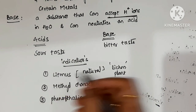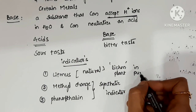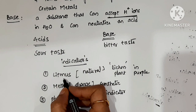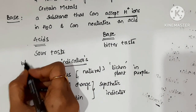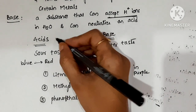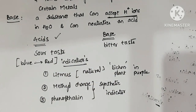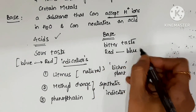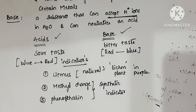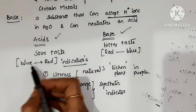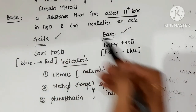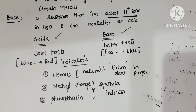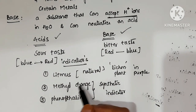Litmus is actually a purple dye — it is purple in color. When litmus paper turns blue to red, the substance is an acid. When litmus paper turns red to blue, the substance is a base. The litmus paper is dipped into the substance: blue to red means acid, red to blue means base. In laboratories, litmus paper is commonly used because it is a natural indicator.